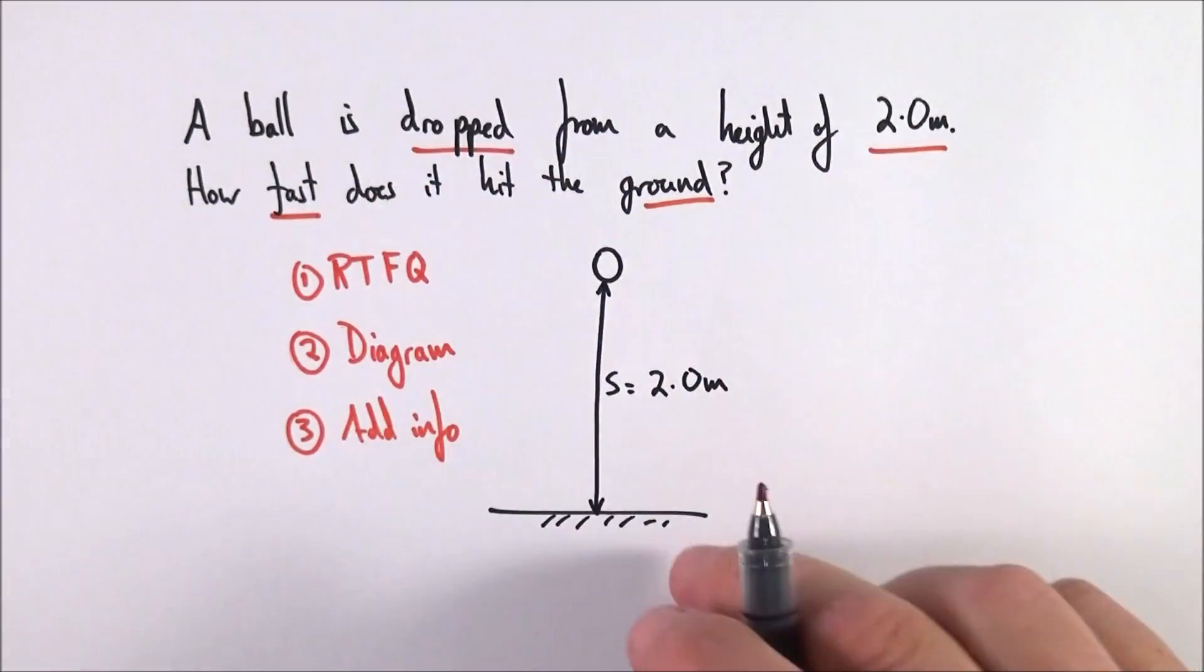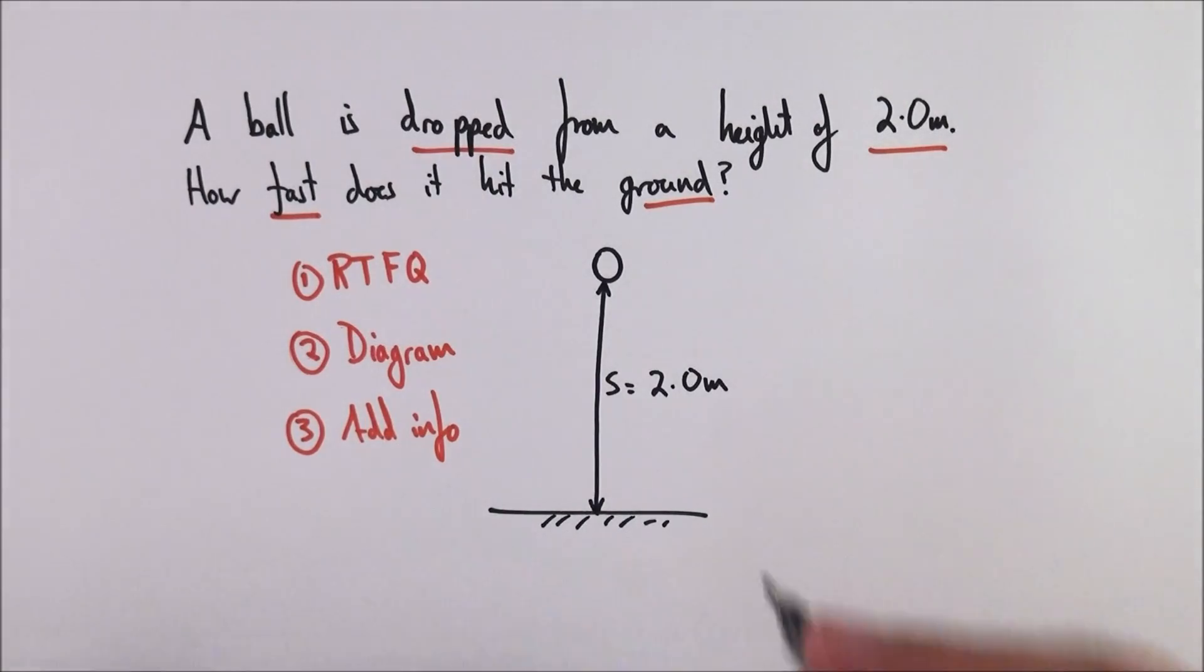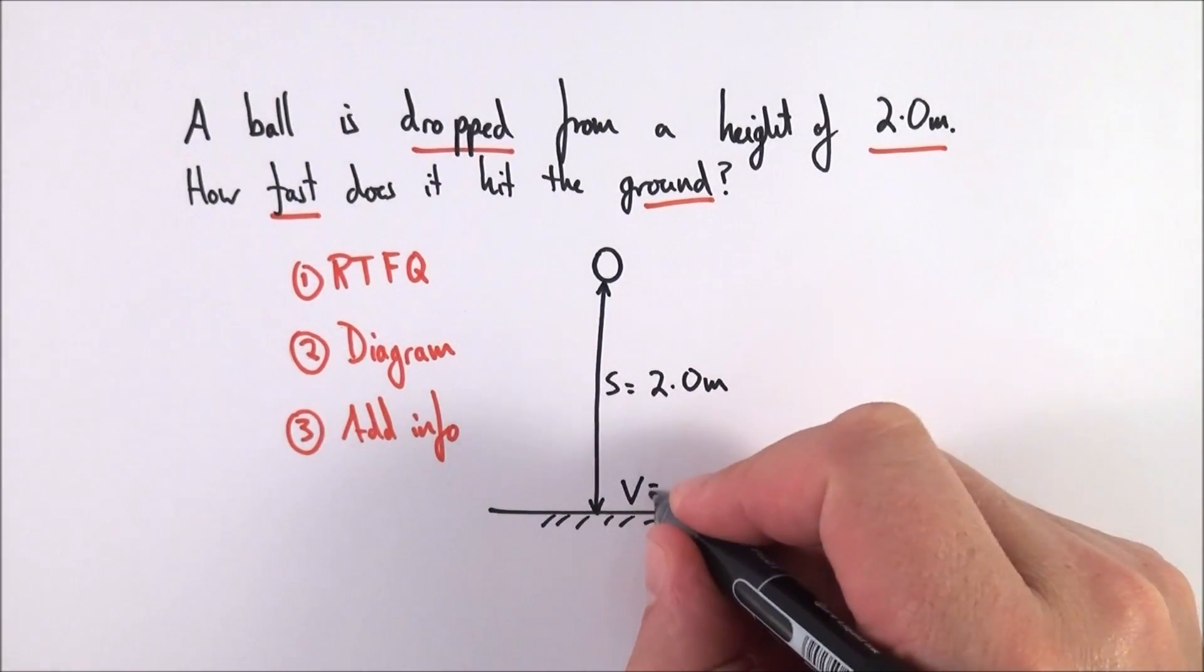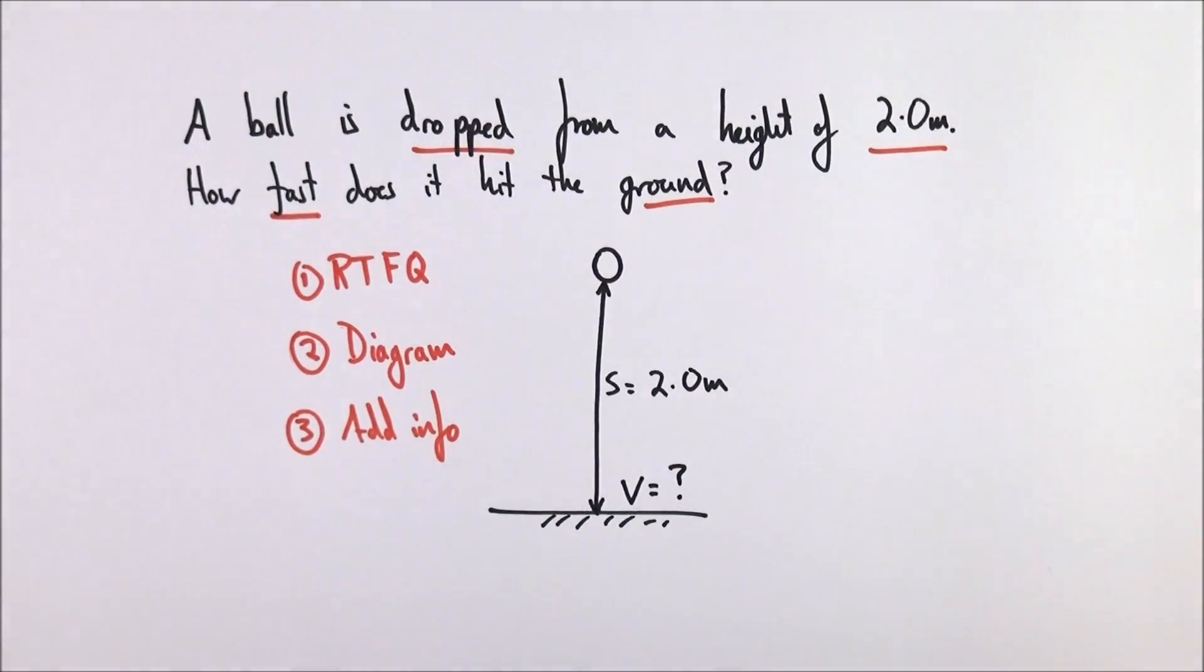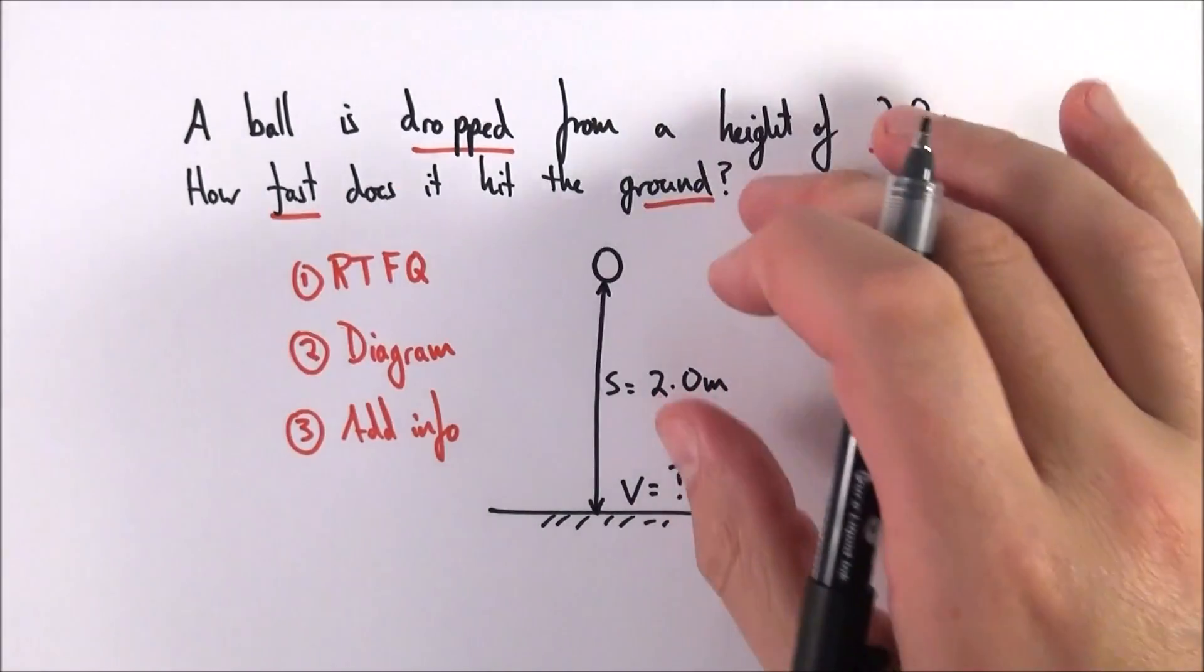How fast does it hit the ground? Well we don't know that, so maybe this is my unknown. So V, the final velocity when it hits the ground, is my unknown. But there are other things that we can take from this question that aren't given to us explicitly.